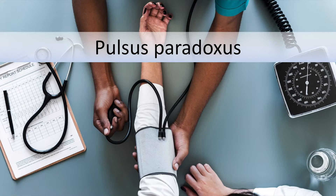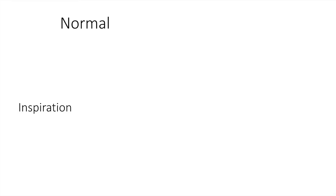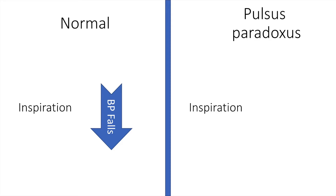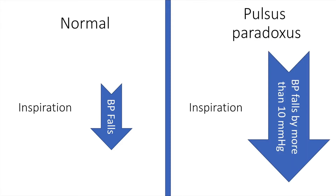Let us now move on to discuss pulsus paradoxus. In normal individuals, when they take a deep breath, there is a fall in blood pressure. However, in pulsus paradoxus on inspiration, this normal fall of the blood pressure is exaggerated — pulsus paradoxus is defined as an exaggeration of a systolic fall of blood pressure by more than 10 millimeters of mercury.